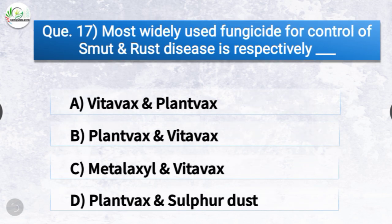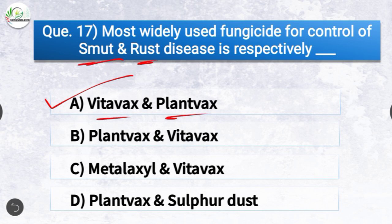Question number seventeen: Most widely used fungicide for control of smut and rust disease respectively is dash. The options are Vitavax and Plantvax, Plantvax and Vitavax, Metalaxyl and Whitex, or Plantvax and sulfur dust. The correct answer is option A, Vitavax and Plantvax. Most widely used fungicide for control of smut disease is Vitavax and for rust disease is Plantvax.